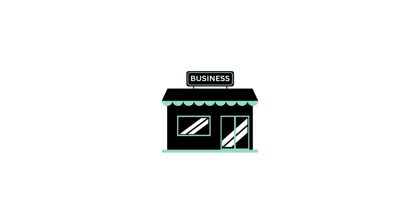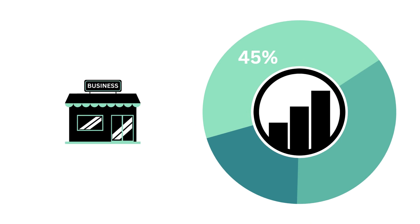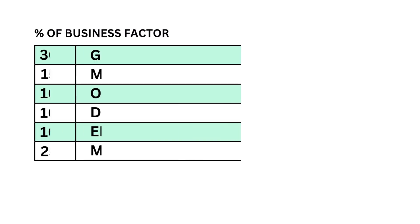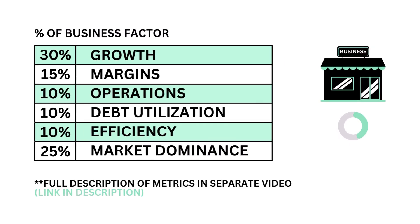First, let's look at the business. The business factor accounts for 45% of the analysis. The business asks the question: is the company a good business to own? There are six metrics that make up the business factor, from growth and efficiency to market dominance.